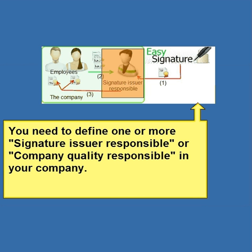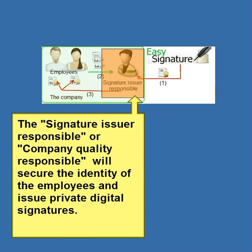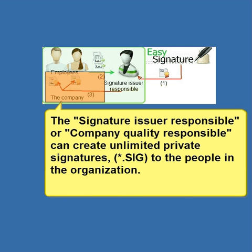You need to define one or more signature issuer responsible, or company quality responsible, in your company. This person will secure the identity of employees and issue private digital signatures. They can create unlimited private signatures for people in the organization.